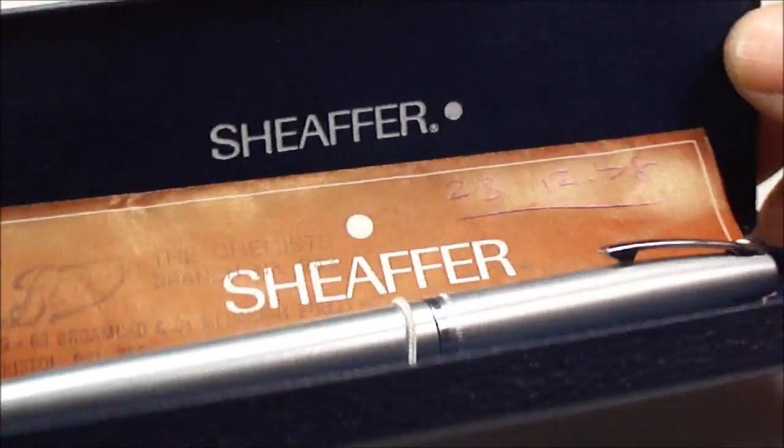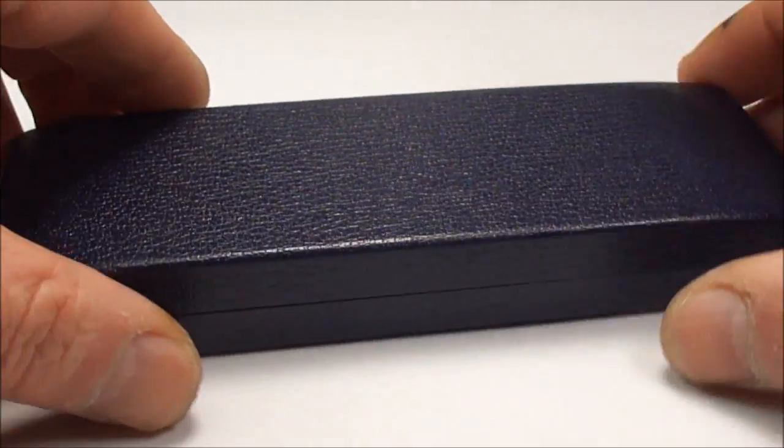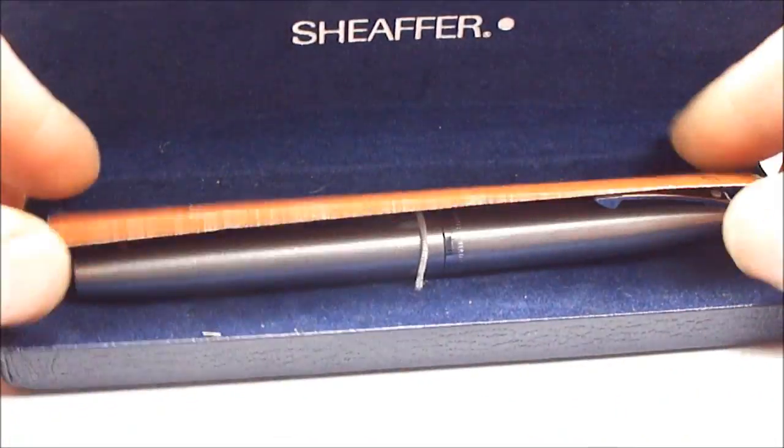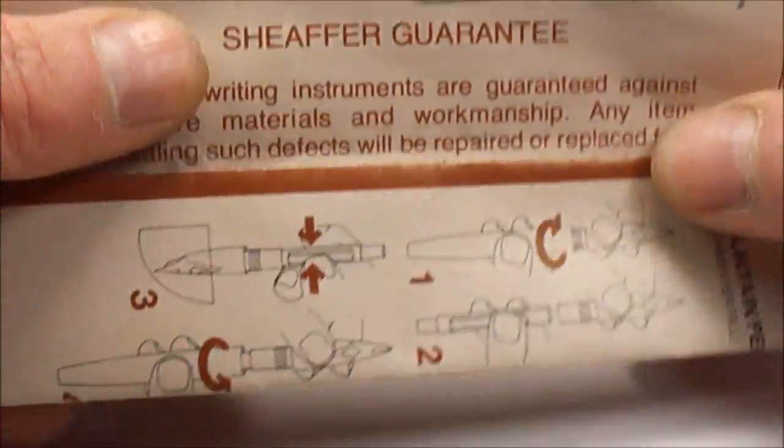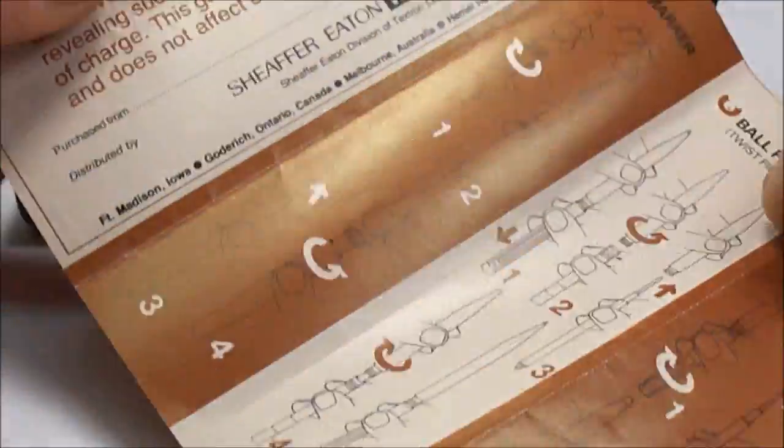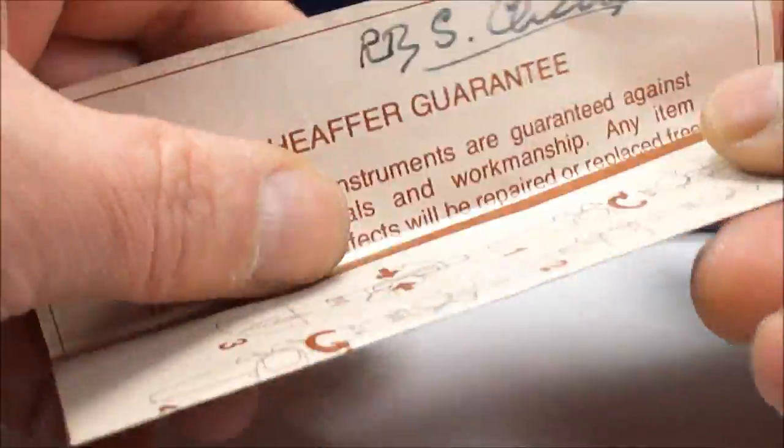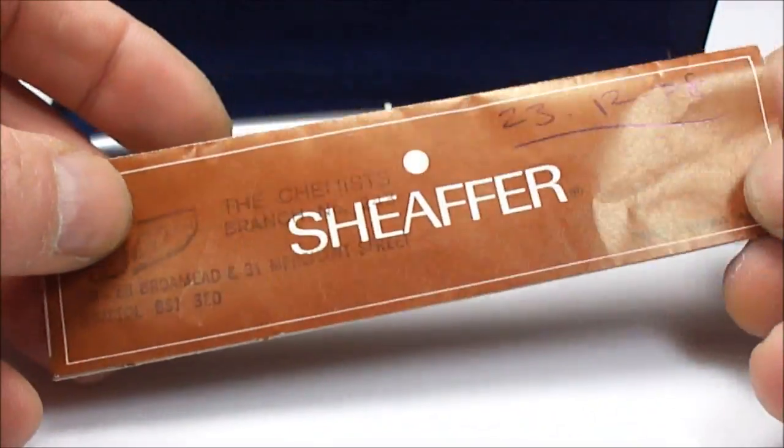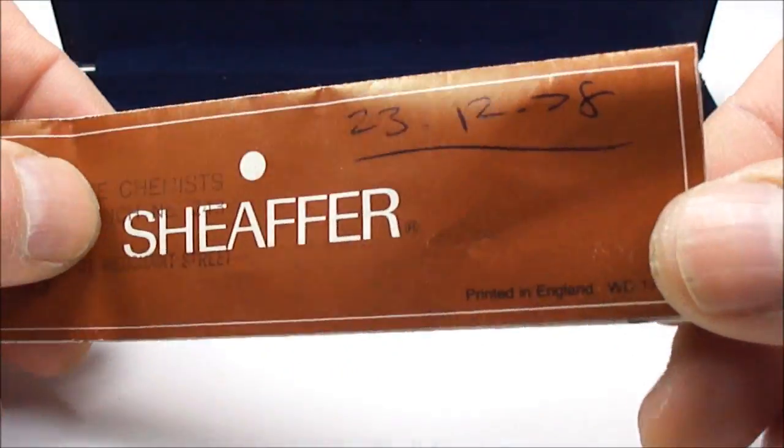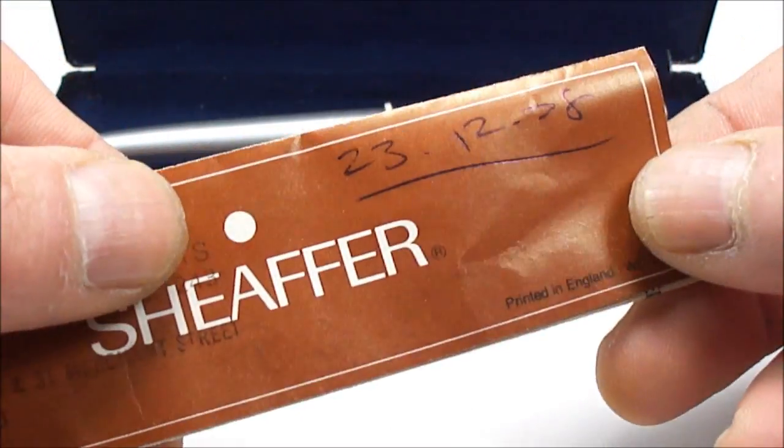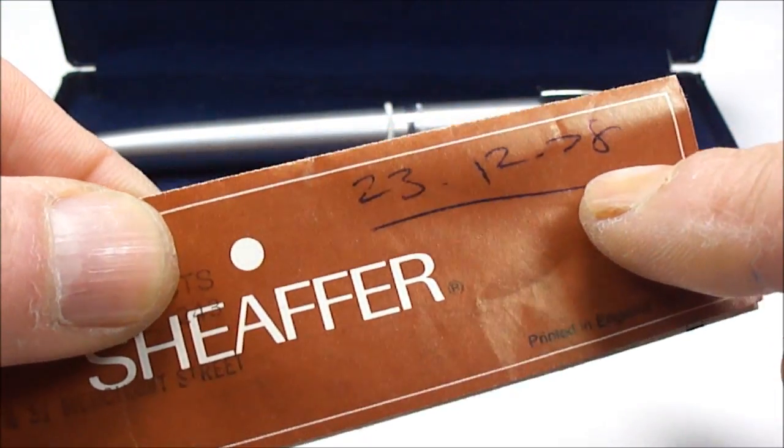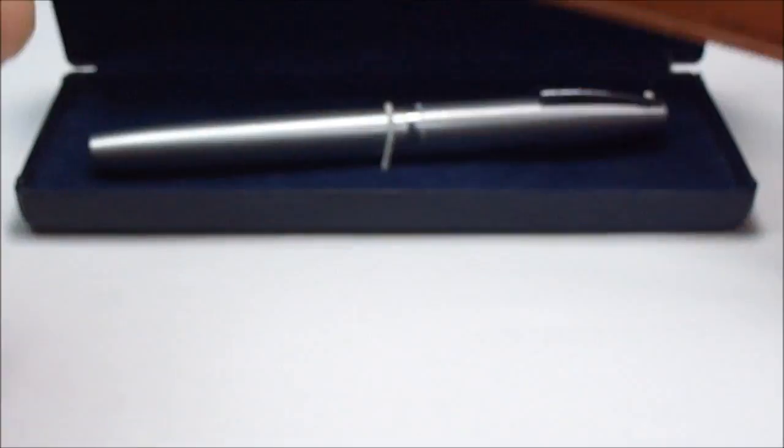As you can see, it comes in this blue sprung hard case with the original instructions here. It tells you how to fill the pen with a converter and a cartridge. You can see it's got the original purchase date, which is 1978.